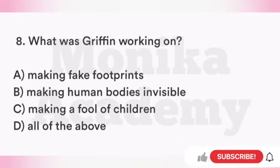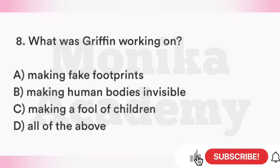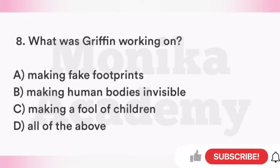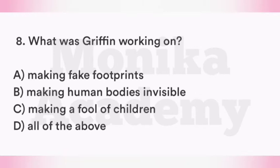Question 8: What was Griffin working on? Option A: Making fake footprints. Option B: Making human bodies invisible — किस तरीके से human beings की body को invisible बनाया जा सकता है. Option C: Making a fool of children. Option D: All of the above. The correct answer is Option B, making human bodies invisible. Griffin was working on how to make human bodies invisible.